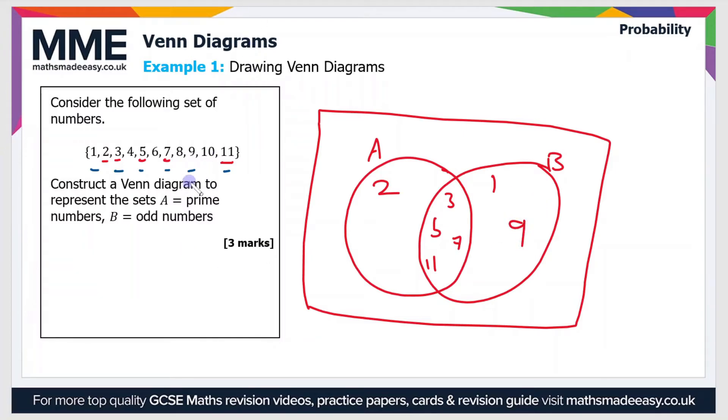And then finally, the remaining numbers we have to put outside of the circle. So those are 4, 6, 8 and 10. So let's just put those here - 4, 6, 8 and 10. So that's all of the numbers then from 1 to 11 have been included in our Venn diagram.